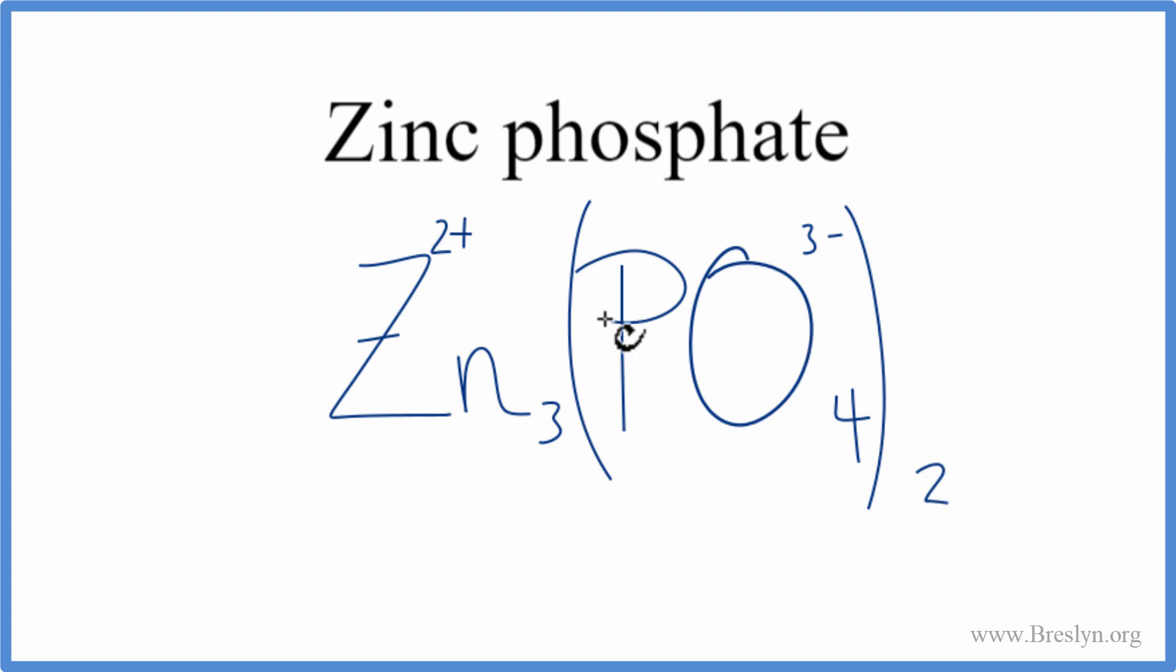We have two of these phosphates. Each one's 3-. 2 times 3-. That gives us a 6-. 3 of these zincs, 3 times 2-plus. That's a 6-plus. So 6-plus, 6-. That adds up to 0. This is the correct formula for zinc phosphate.